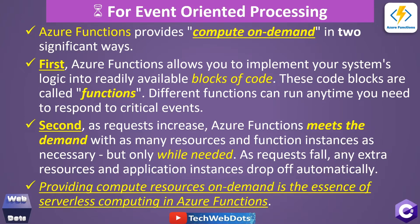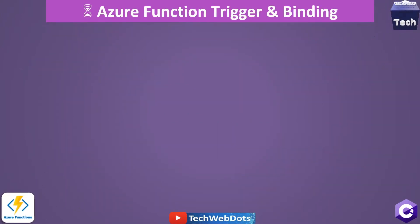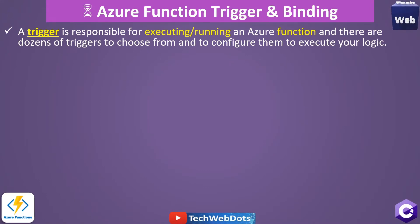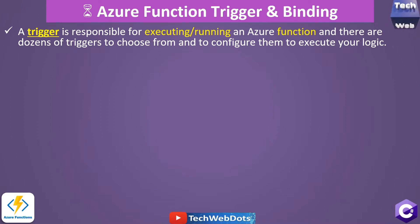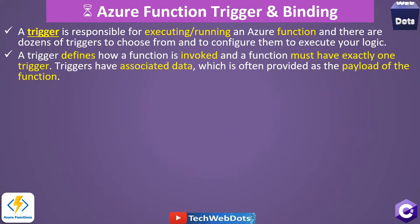Providing compute resources on demand is the essence of serverless computing. A trigger is responsible for executing, or running, an Azure Function, and there are dozens of triggers to choose from and configure. For example, an HTTP trigger responds to a URL request using the HTTP protocol. A trigger defines how a function is invoked, and a function must have exactly one trigger.